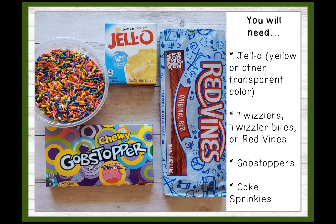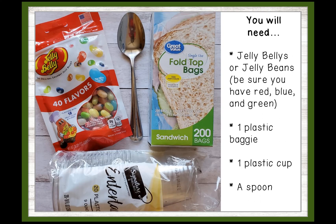A package of jello, yellow or another transparent color. Twizzlers, Twizzler bites, or red vines. Gobstoppers, cake sprinkles, jelly beans or jelly bellies — be sure to grab a bag that has green, red, and blue in it. A plastic baggie, I like the ones with the fold tops. A plastic cup and a spoon.